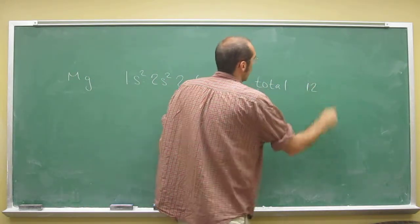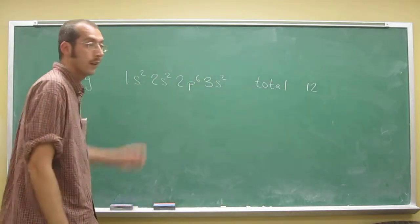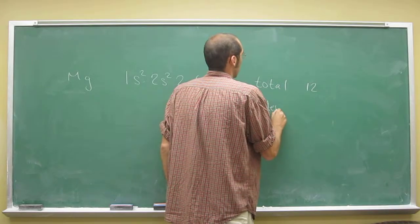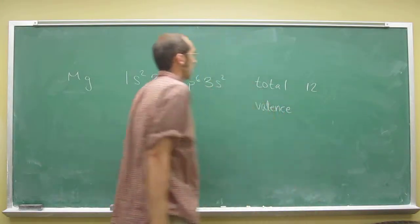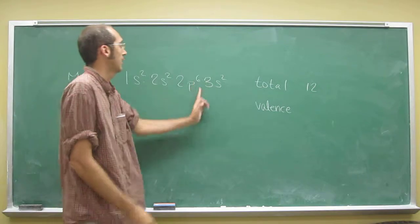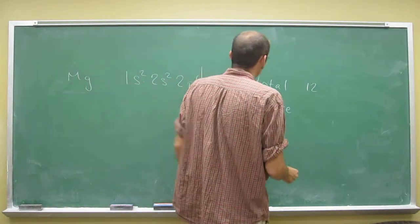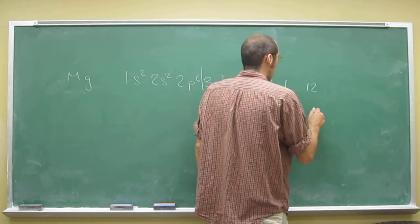So then it asks the valence electrons. Last energy level, right? Or after the noble gas. So that's 2.